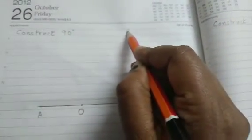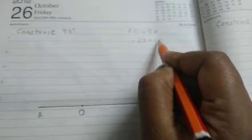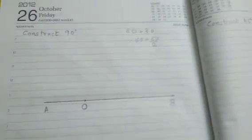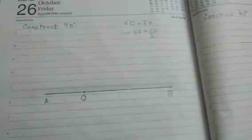At O, now what will I do to construct 90 degrees? What is 90 degrees? First I need to know 60 plus 30 makes 90. So this is equal to 60 plus a bisector of 60, right? 60 plus a bisector of 60, so we are doing that.